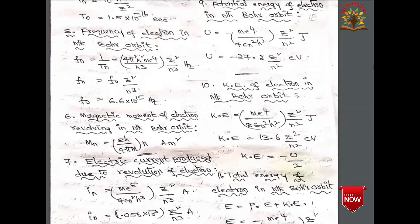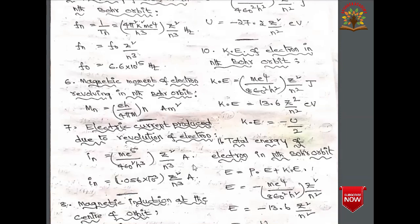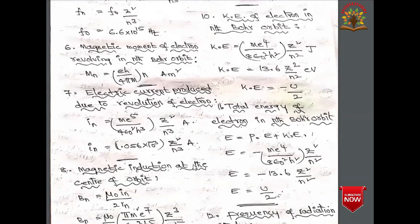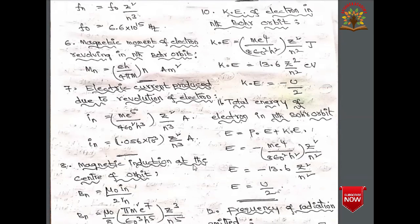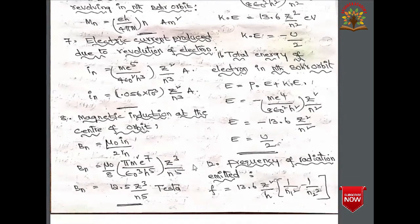The potential energy of an electron in the nth Bohr orbit is U = −me⁴/(4ε₀²h²) × Z²/n² joules, or U = −27.2 × Z²/n² eV. The kinetic energy is KE = me⁴/(8ε₀²h²) × Z²/n² joules, or KE = 13.6 × Z²/n² eV, and KE = −U/2.